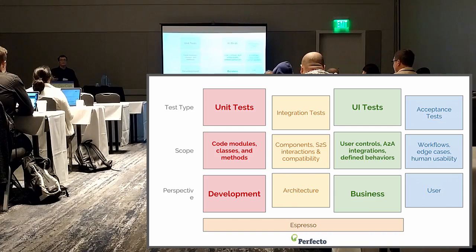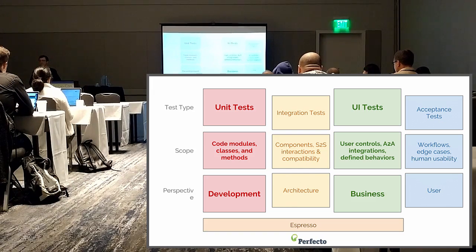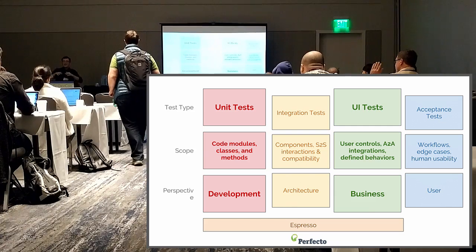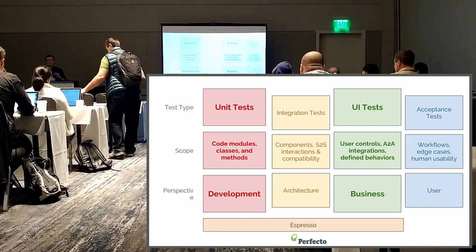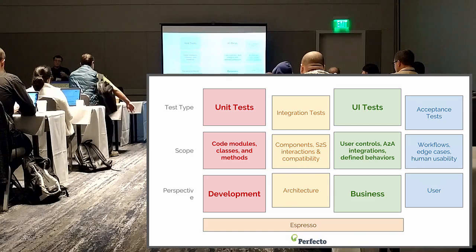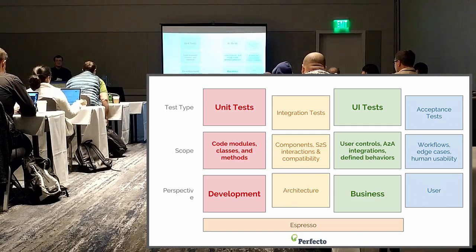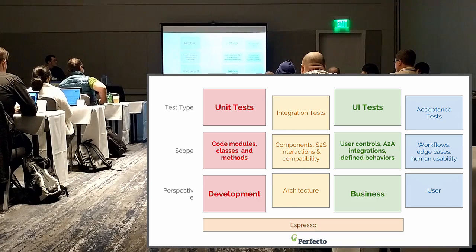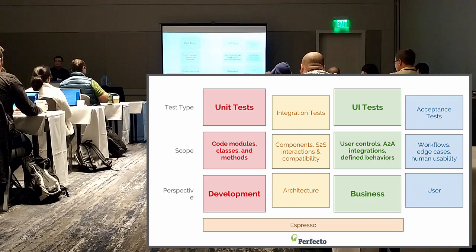We ship and write a lot of unit tests. One of the anti-patterns I see, even going on Google best practices — who has seen the testing pyramid? Unit tests at the bottom, integration in the middle, and UI testing at the top. It provides a view of how much time you should spend on each type of test: unit tests around 70%, and it varies per organization and project. If we think about the scope of unit tests, they test things like code modules, classes, methods, basic code.